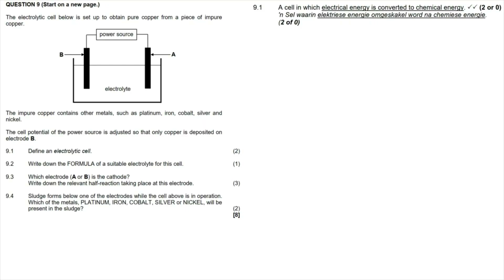Question 9: the electrolytic cell below is set up to obtain pure copper from a piece of impure copper. The impure copper contains other metals such as platinum, iron, cobalt, silver and nickel. The cell potential of the power source is adjusted so that only copper is deposited on the electrode.